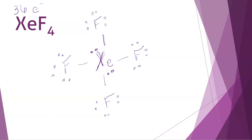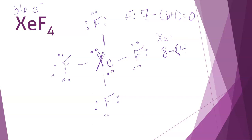We can prove that's correct by looking at the formal charge. Fluorine — and all four of our fluorines are the same, so I'll only do the calculation once — starts with seven valence electrons, has six non-bonding electrons and one bond, which gives a formal charge of zero for each fluorine. The xenon starts with eight valence electrons, being a noble gas. We subtract four non-bonding electrons and four bonds, which also works out to be zero. So the formal charges confirm that this structure, with the expanded octet on xenon, is indeed the correct structure.